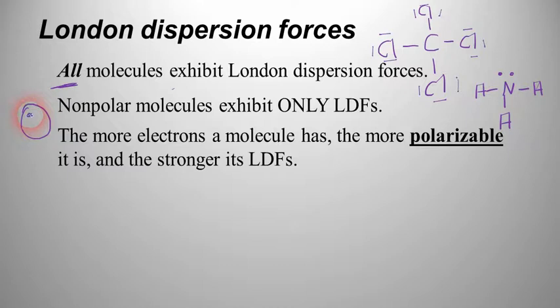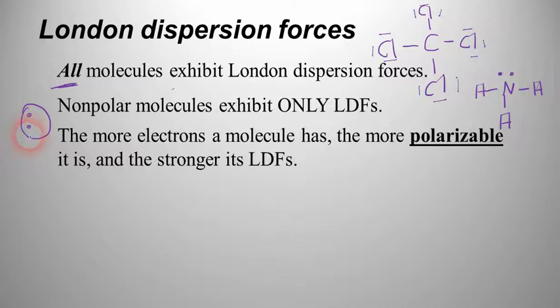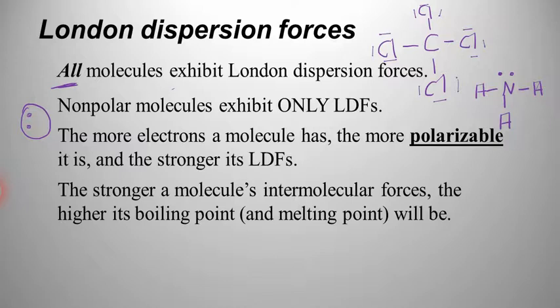So the more electrons something has, it's going to have stronger London dispersion forces. Helium would be very weak, neon is greater, and something like radon would have 86 electrons — imagine all those in that lopsided structure, that could be a fairly strong force. Normally, the stronger a molecule's intermolecular forces are, its boiling point and melting point are going to be higher. So neon would have a higher boiling point than helium because it has more electrons.